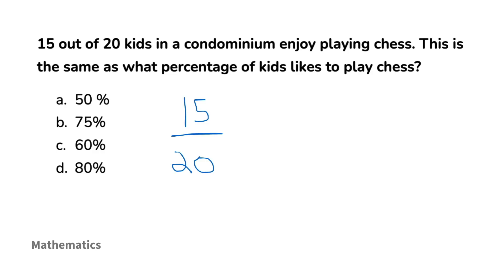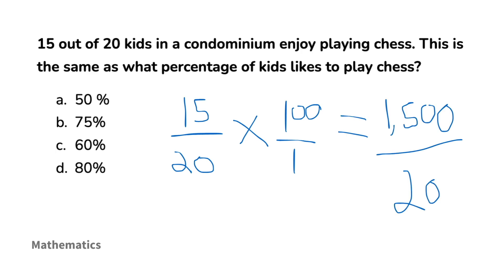Let's work through this. Remember that 15 out of 20 means 15 over 20. To express this ratio or fraction as a percentage, you can multiply the ratio by 100, then convert the entire fraction into its simplest form, which gives us 1500 over 20, and this gives us the answer of 75. The expectation is that if you are taking this exam you remember how to do the basic math such as long division like 1500 divided by 20.